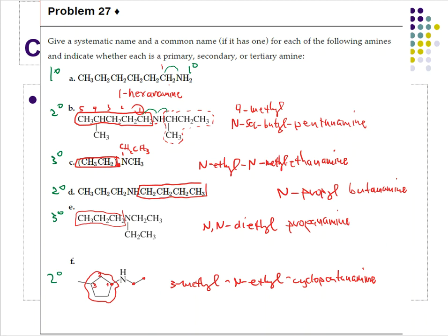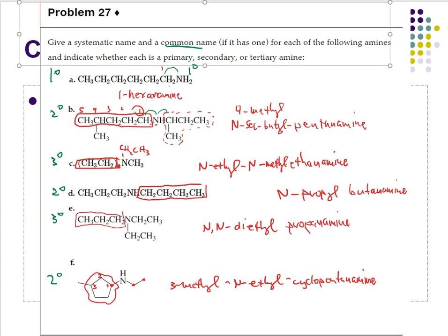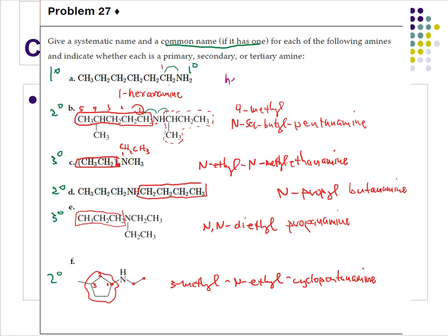Now we need to look at common names, but only if the structure has one. If the groups are simple enough to be named easily, it probably does have a common name. For A, the way we form common names: this is a six-carbon chain, so we name it as a hexyl — not hexane, that's the difference — and then add amine on the end. So hexylamine is the common name for that structure.